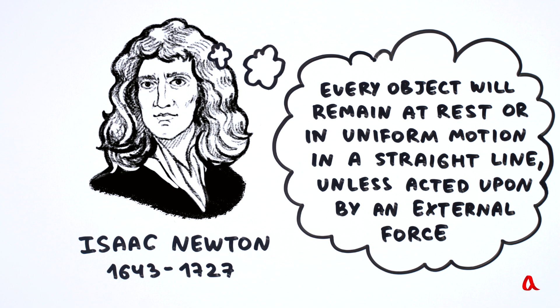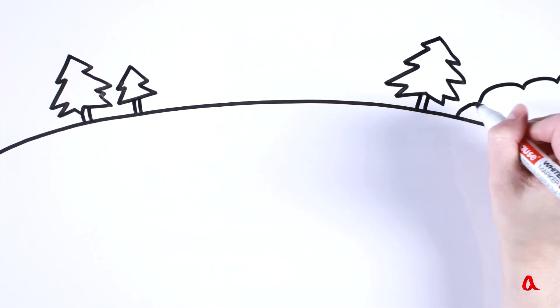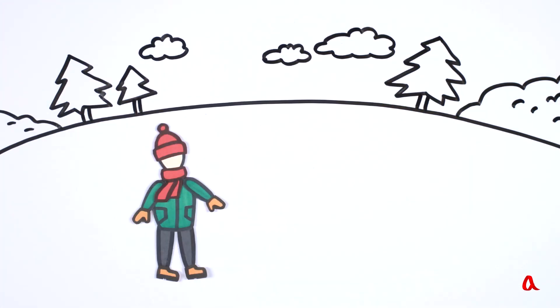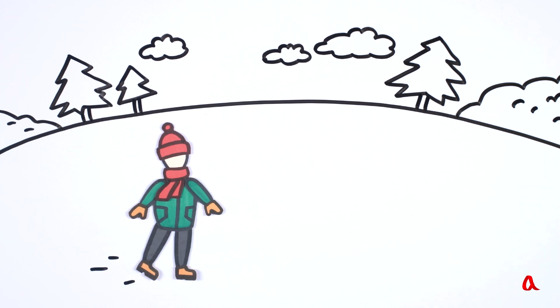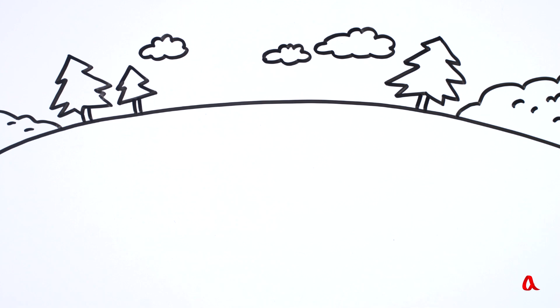This law is usually called the law of inertia. To imagine the effect of this law, let's look at a person trying to walk on smooth ice. If he's standing still, it will be very difficult for him to accelerate, and if he's moving, it will be just as difficult for him to slow down and stop.